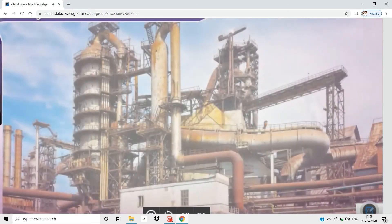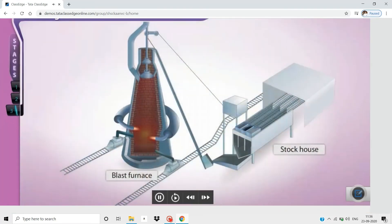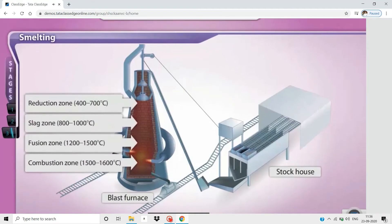Smelting is carried out in a blast furnace. The blast furnace is a tall structure and can be divided into zones, depending on the temperature and the reactions that take place in each zone.